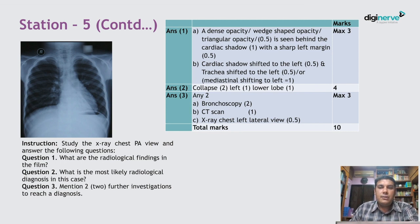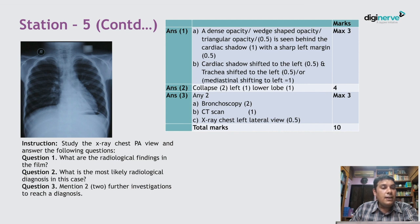The cardiac shadow is shifted to the left, and the trachea is also shifted to the left — a mediastinal shift to the left. This is an X-ray of collapse of the left lower lobe.